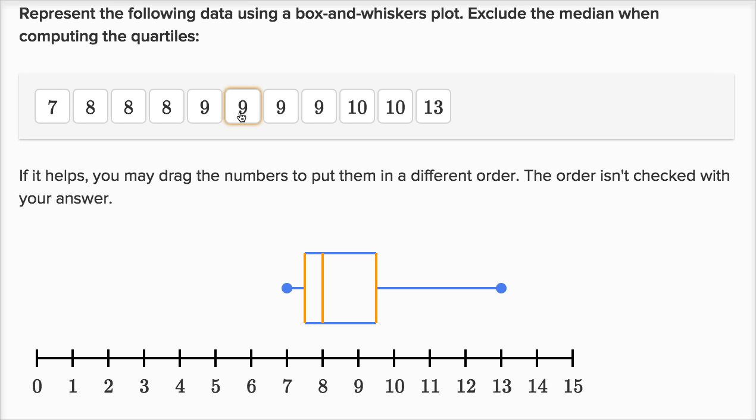But here I have 11 numbers, so my median is going to be the middle one. It has five larger, five less. It's this nine right over here. If I had my pen tablet, I would circle it. So it's this nine. That is the median.